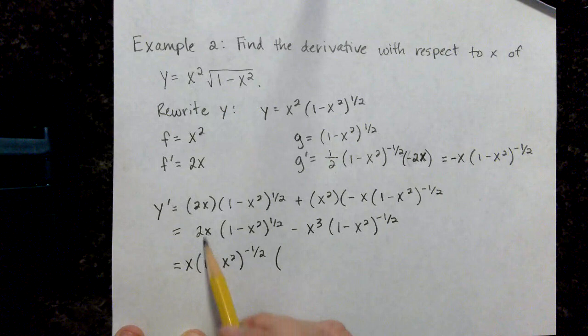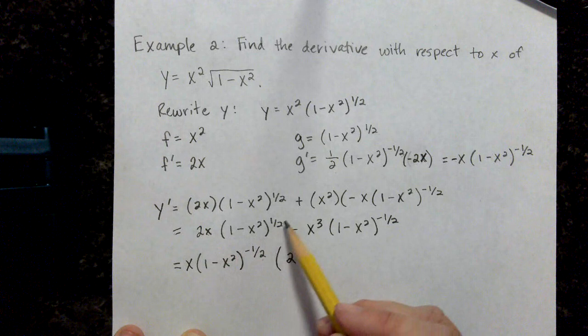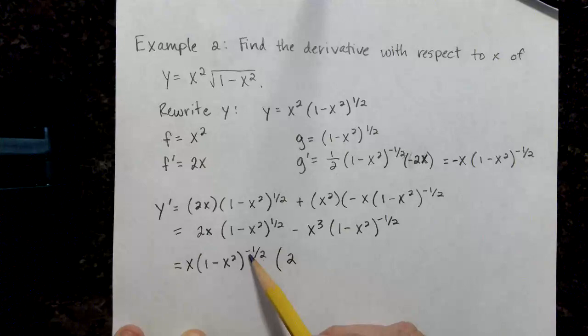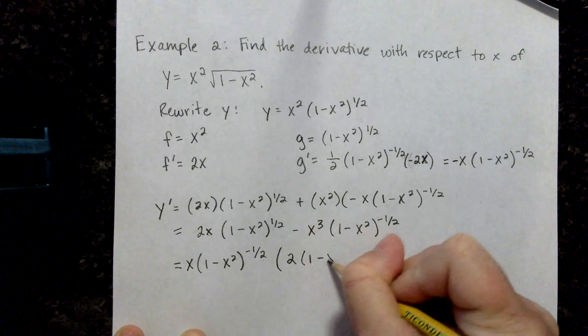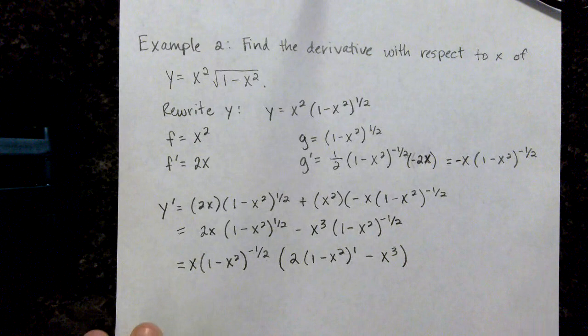So now when I factor that out, I'm pulling out, I'm not pulling out the 2, so I still have that 2 there. And then if I am factoring out a 1 minus x squared to the negative 1 half, that means I'm taking this and I'm subtracting the exponents. So 1 half minus negative 1 half is 1 half plus 1 half, which means this is this factor to the first power.